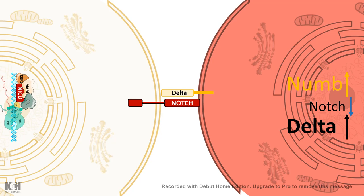On the other hand, the receiver cell — the sheath cell precursor — expresses Notch. Notch signaling in this receiver cell first transcribes Notch itself, increasing the level of Notch but decreasing the level of Delta. So the sheath cell precursor has a higher level of Notch compared to the neuron, whereas the neuron precursor has a higher level of Delta compared to the sheath cell precursor. This differential concentration of Notch and Delta ultimately leads to different transcriptional programs and different cellular outcomes.